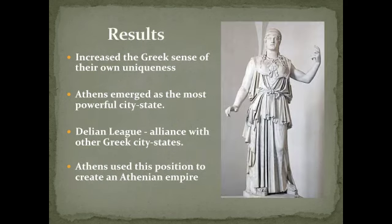This victory over the Persians had several results in the Greek world. One of them was an increased sense of Greek uniqueness — they firmly believed that their gods had protected them and their superior form of government from this outside threat. Athens emerged as the most powerful city-state and organized the Delian League, which was an alliance with other Greek city-states. They used their position as leaders of the Delian League to create an Athenian Empire, using money contributed by other city-states to rebuild Athens, and when other states raised complaints, they quickly squelched them using force.